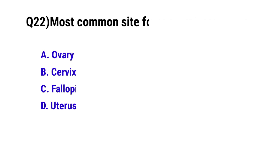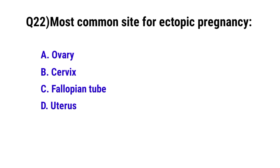Question No. 22: Most common site of ectopic pregnancy is? The correct option is C: Fallopian tube.